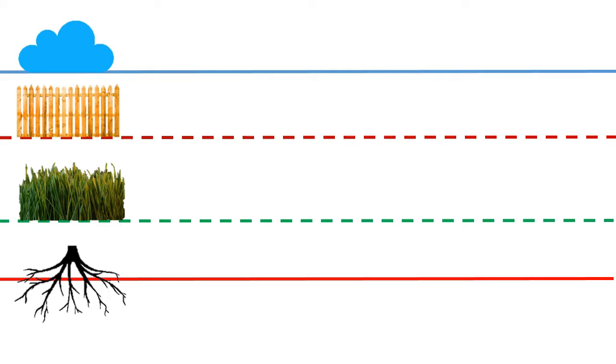First line is skyline. Second line is fence line. The third line is grass line. The fourth line is root line.